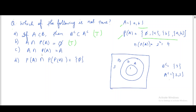For option (c), A intersection P(A) is claimed to equal A. But we just established that A intersection P(A) equals phi, because P(A) contains subsets like {a, b} rather than the raw elements a and b. Since A's elements don't appear in P(A), the intersection is phi, not A. So option (c) is false — this is the correct answer.